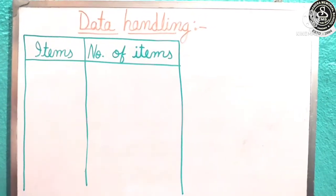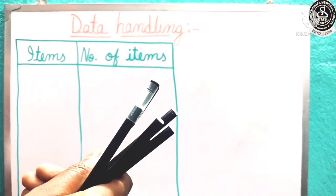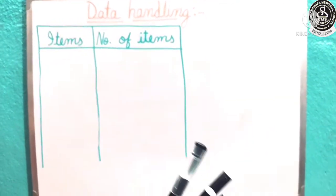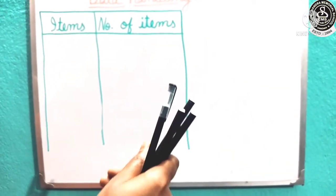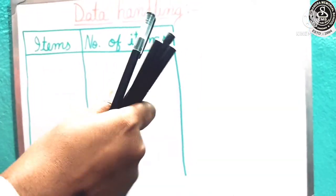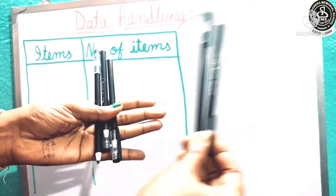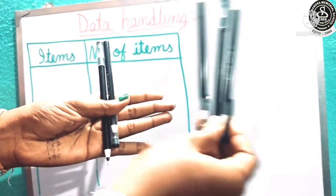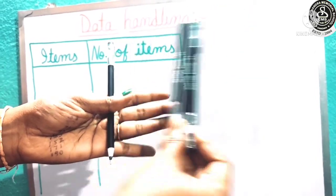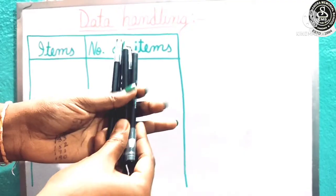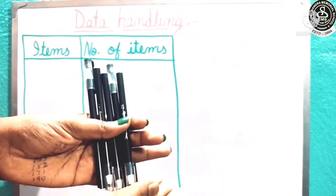First I have some black pens. I have some black pen as you can see. How many black pens are there? Let us count: 1, 2, 3, 4 and 5. So how many black pen we get? Total 5 black pens.